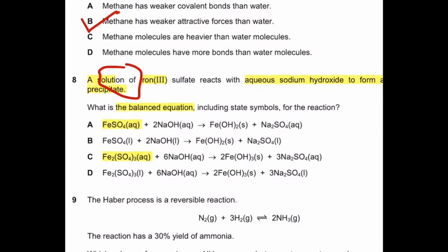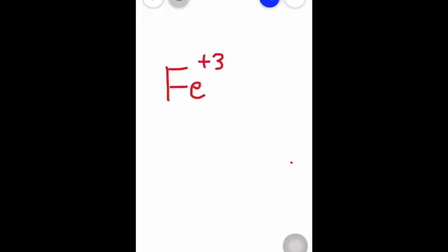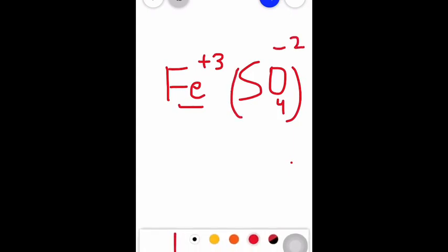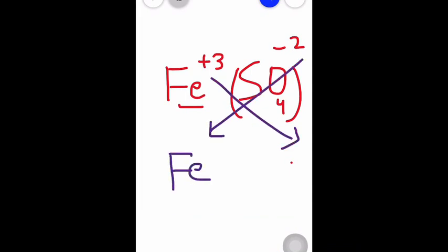Second thing is that you have to see which one is the correct balanced equation. If you notice that iron 3 sulfate, iron 3 sulfate means iron has valency plus 3. Iron has plus 3 charge. Sulfate has minus 2 charge. Cross over. And formula is Fe2(SO4)3. So correct answer is option C.